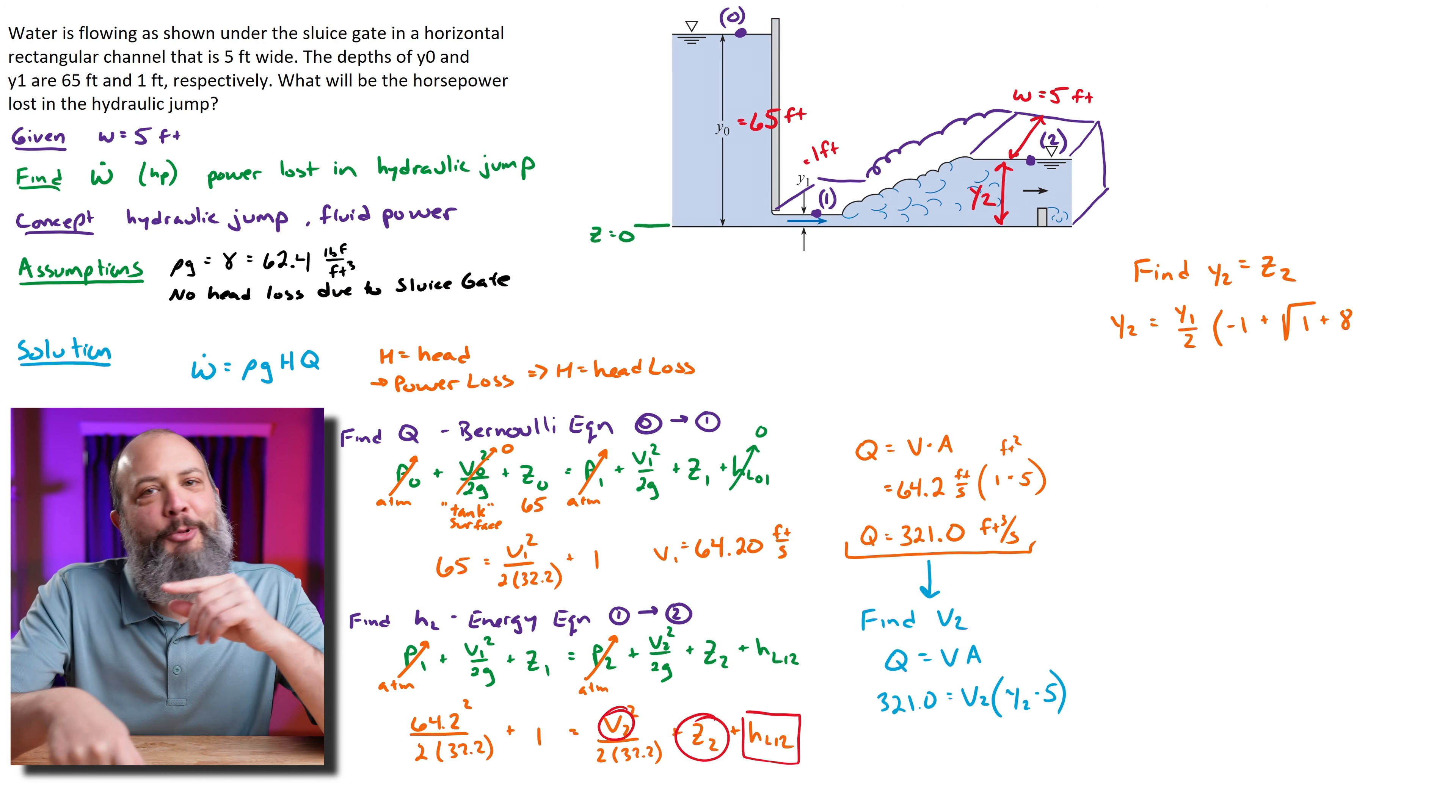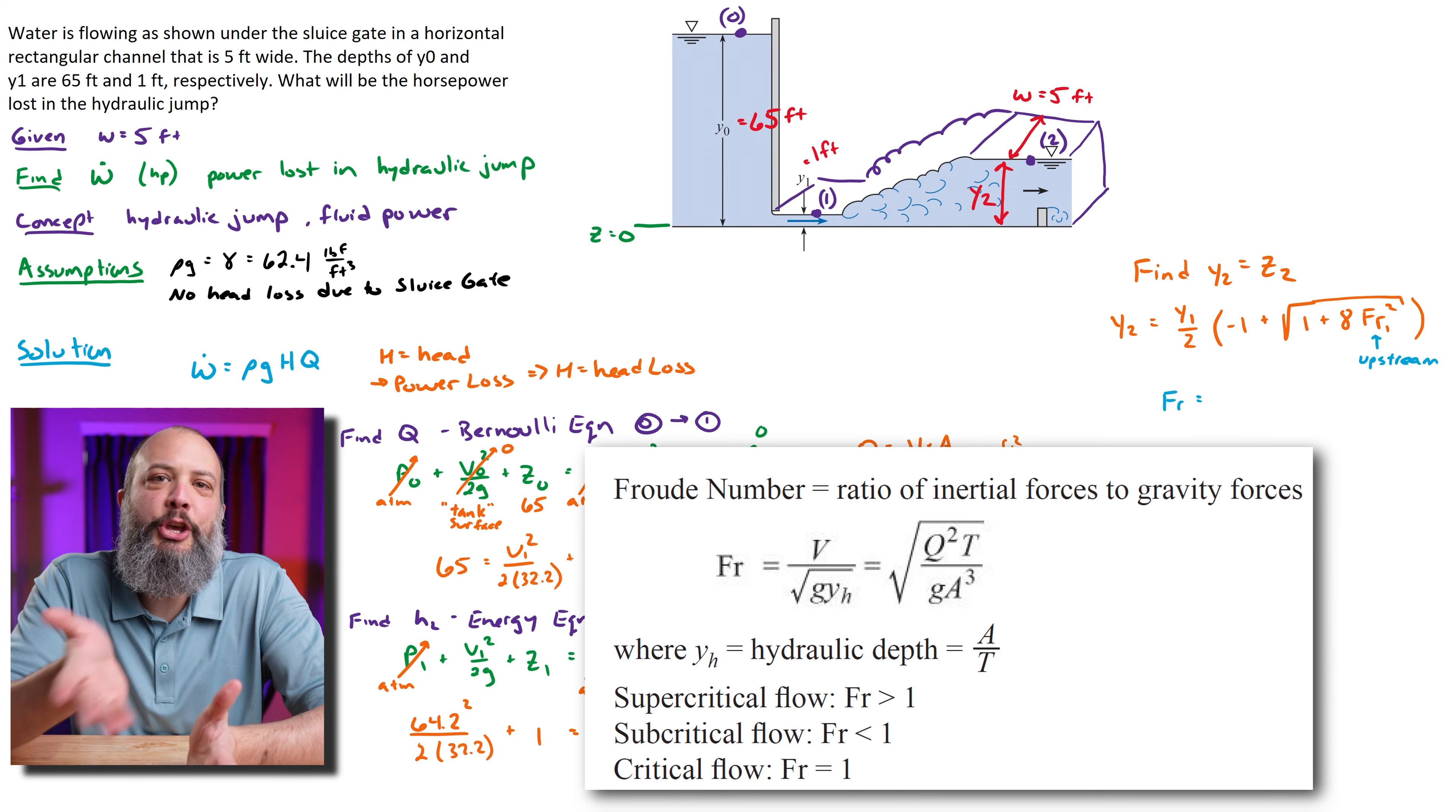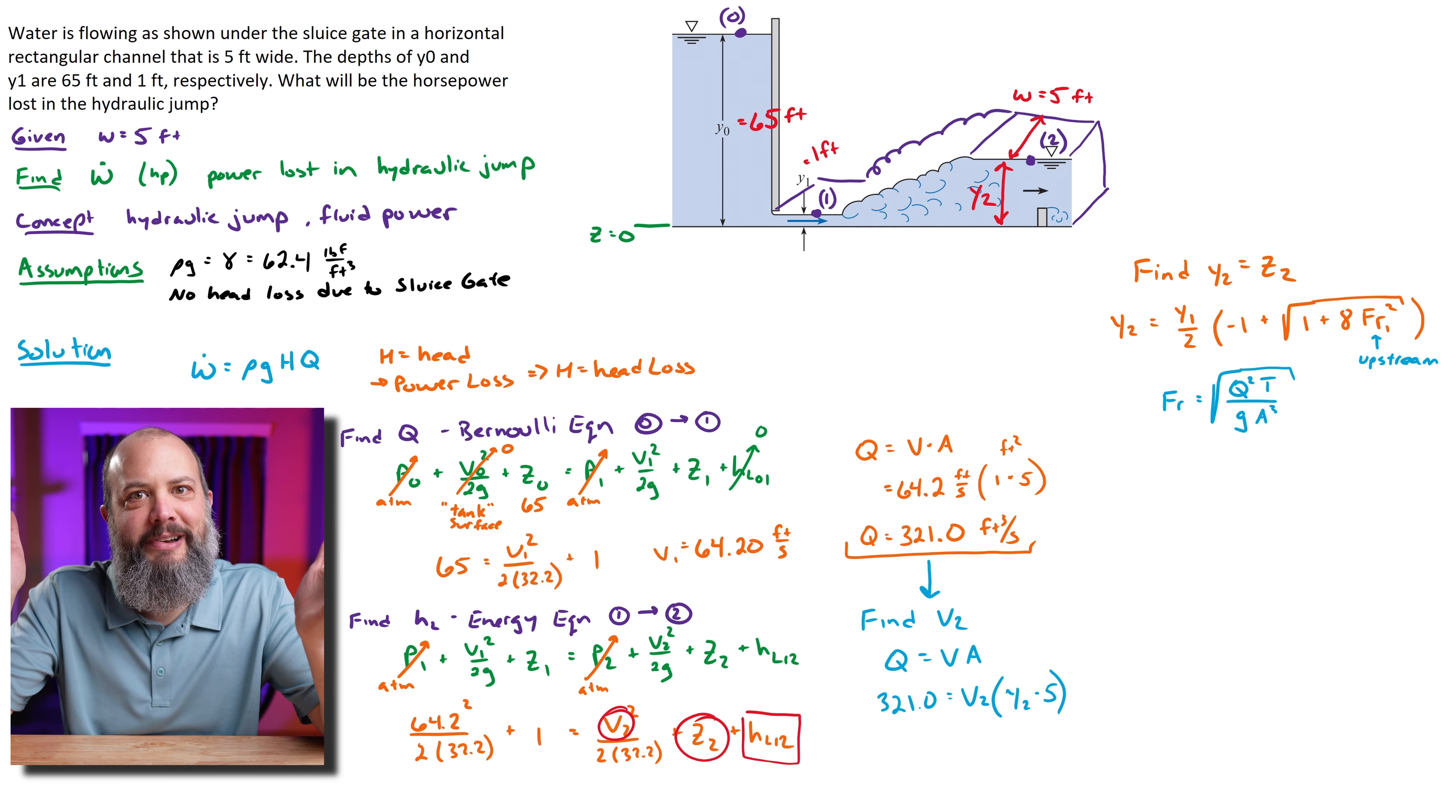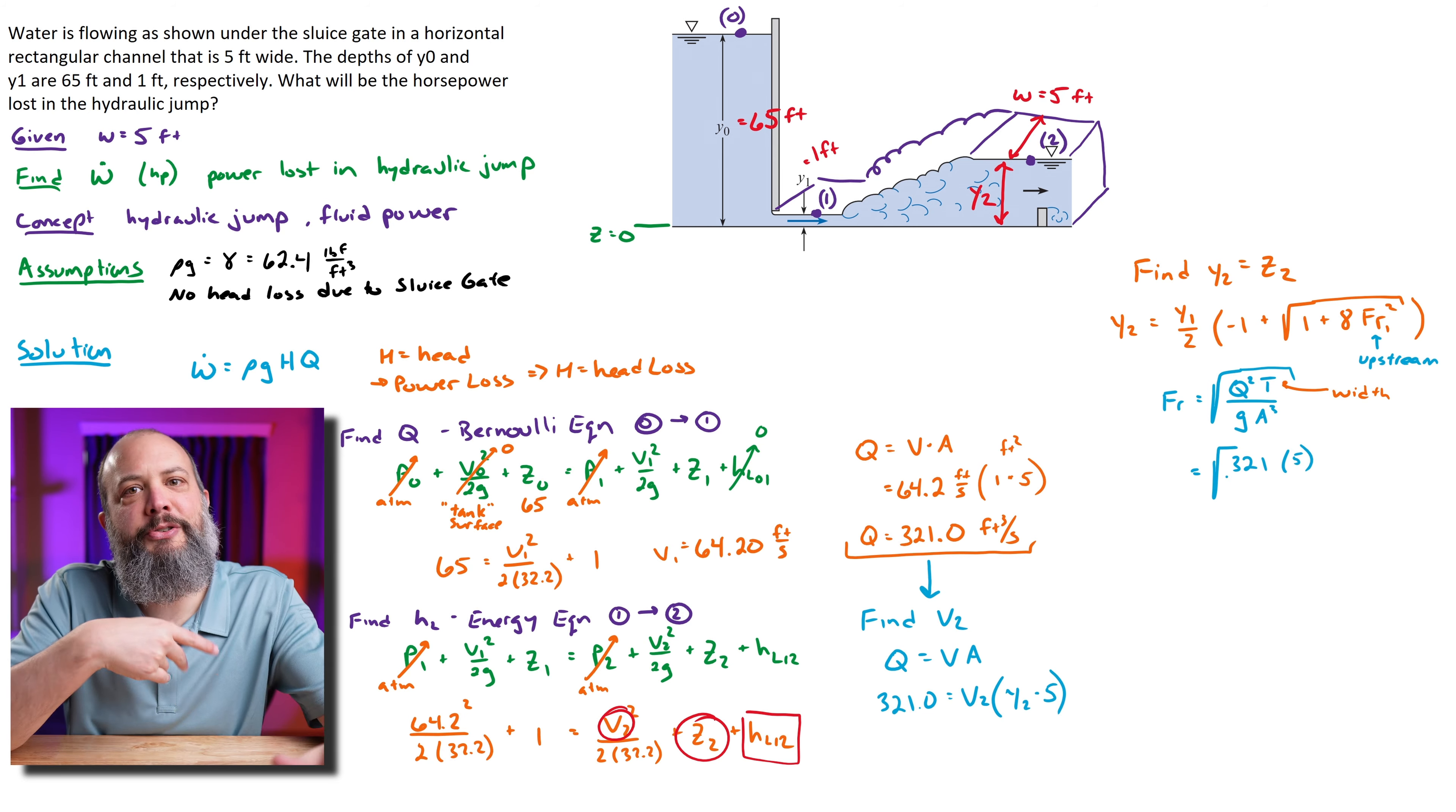I'll grab the height after hydraulic jump equation from the FE reference manual. It looks like I'm going further down the rabbit hole because now I need to find the Froude number to be able to plug into the height of hydraulic jump equation. There's different versions of the Froude number—I'm going to grab the version that has Q in it since I already have Q. So Q²T over gA² all under a square root. This T is thickness, not time or anything else. That's our 5-foot width of the channel, the 321 for Q, 32.2 for gravity.